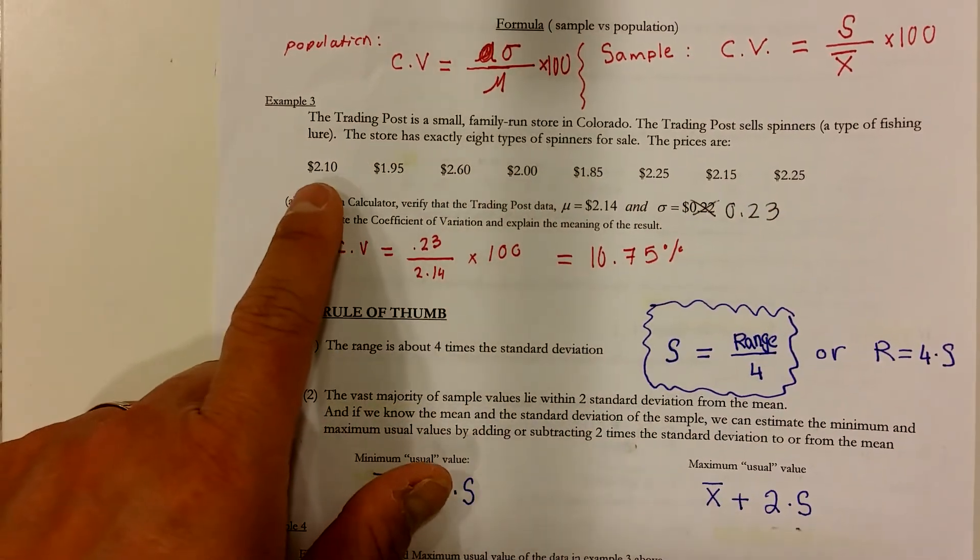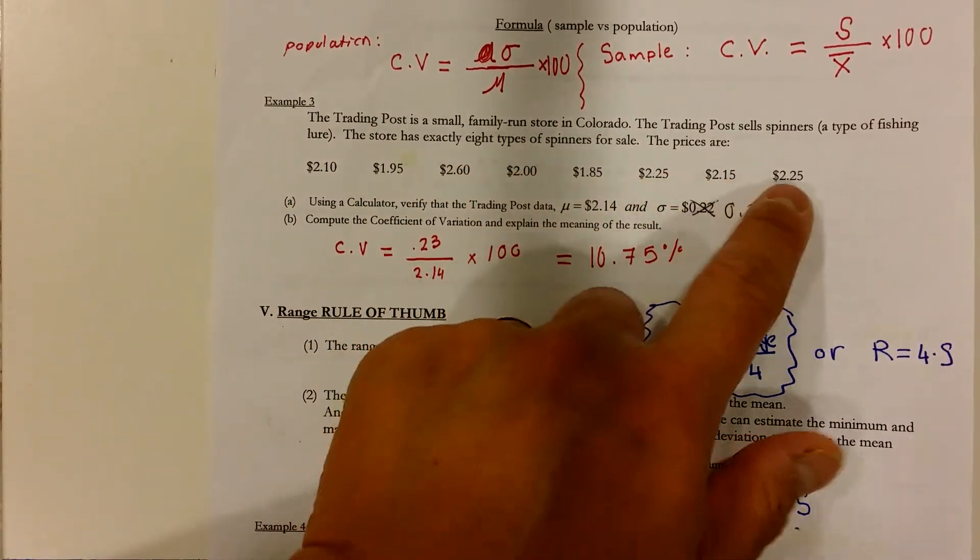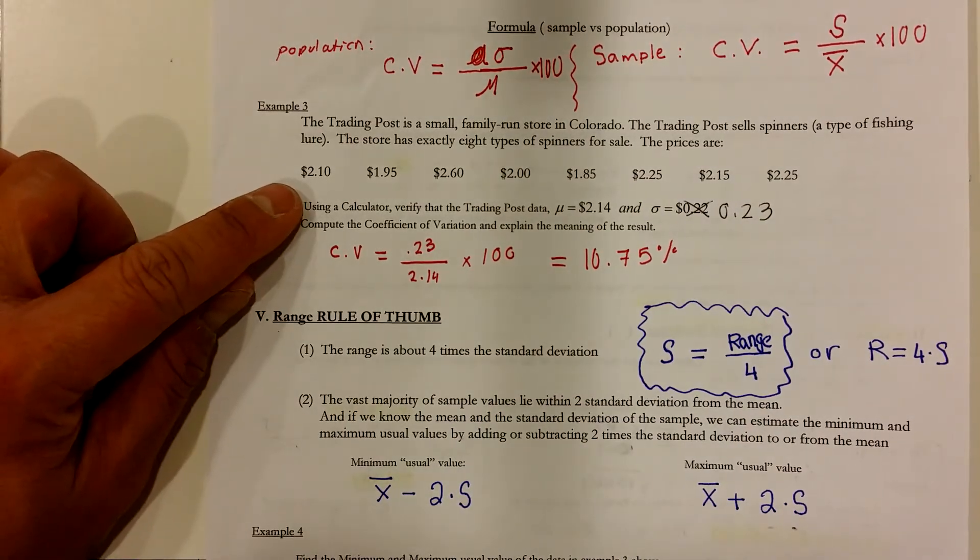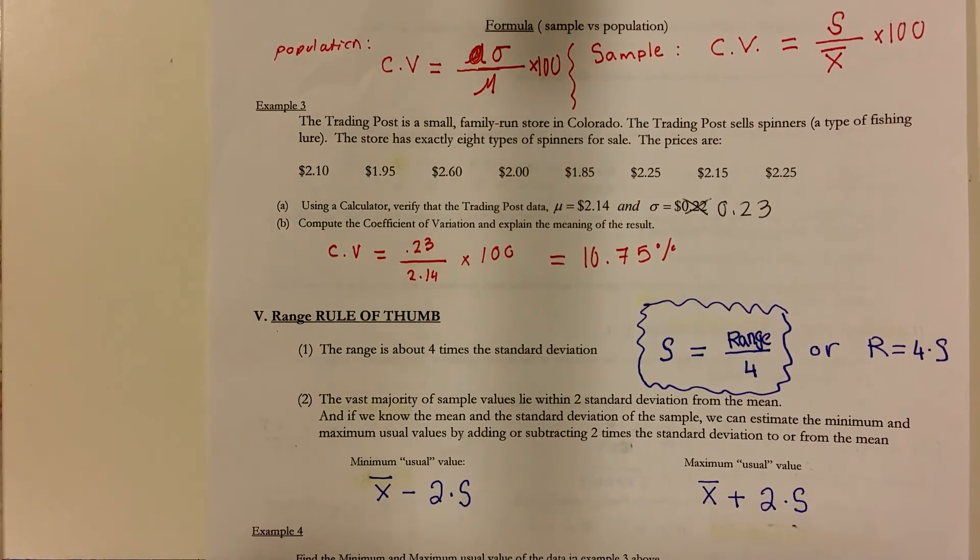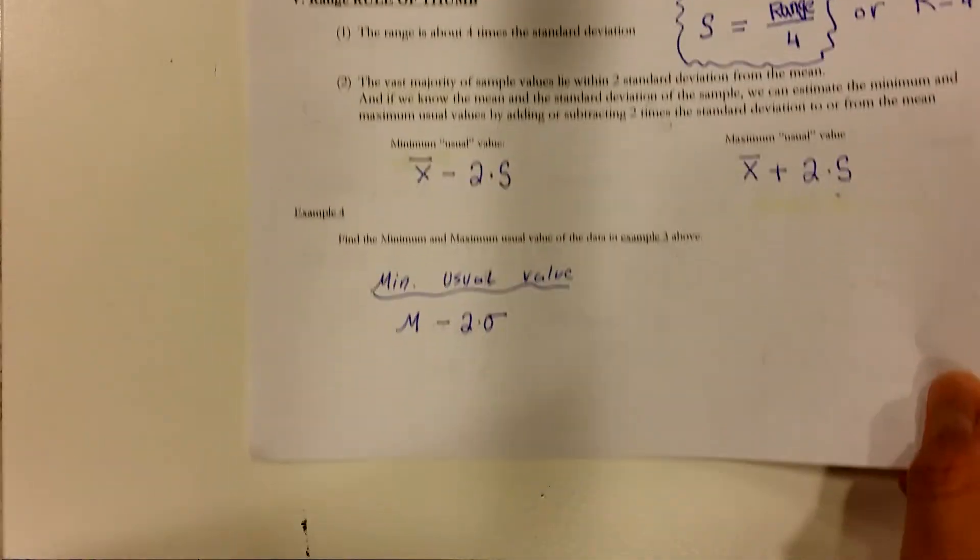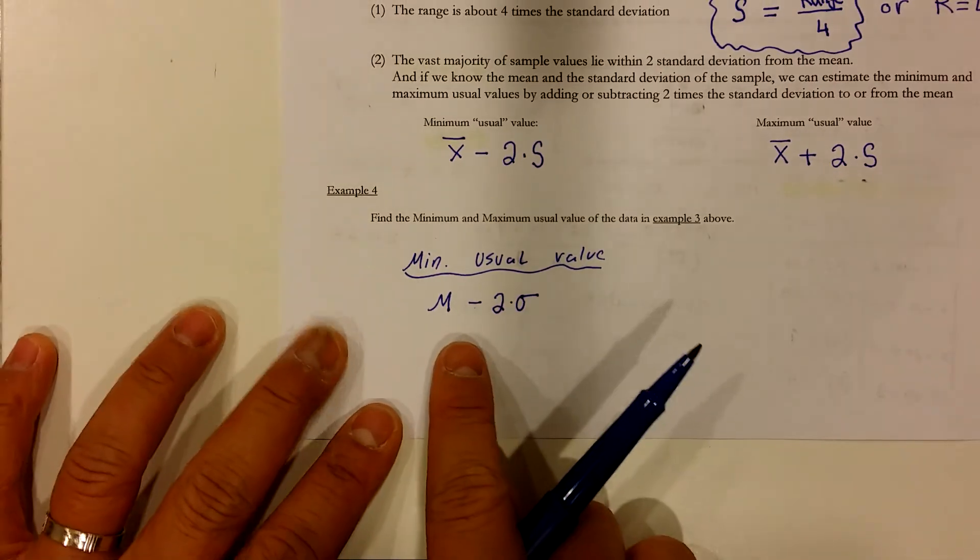The reason why I use these letters instead of s and x is because this is our population data. This store sold 8 different kinds of spinner and that's all they have and we took every one of those into consideration and therefore that's our population. So, anyway, so this is our usual value.